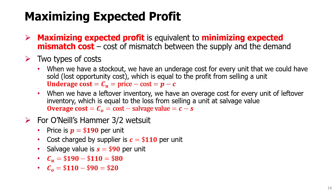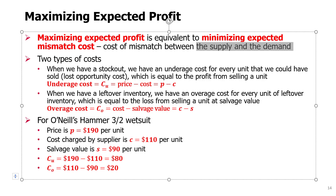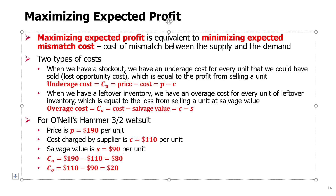The first thing to realize is that we are not guaranteed any profit because demand is uncertain. Whatever quantity we order, we might have some leftover if demand is lower than our quantity, or we can have some lost sales if demand is higher than our quantity. We can define something called a cost of mismatch, which is the mismatch between supply — our order quantity — and the uncertain demand.